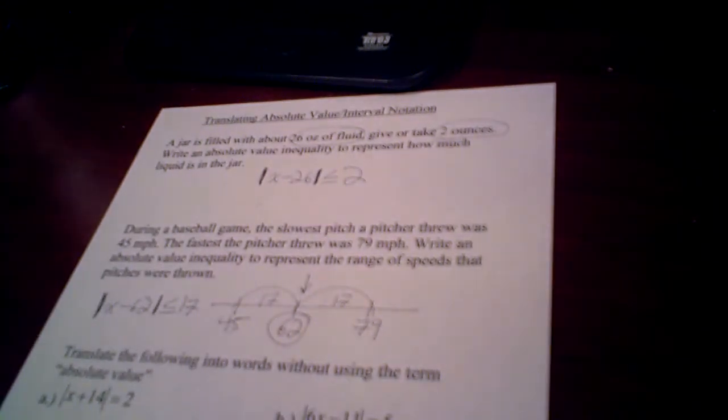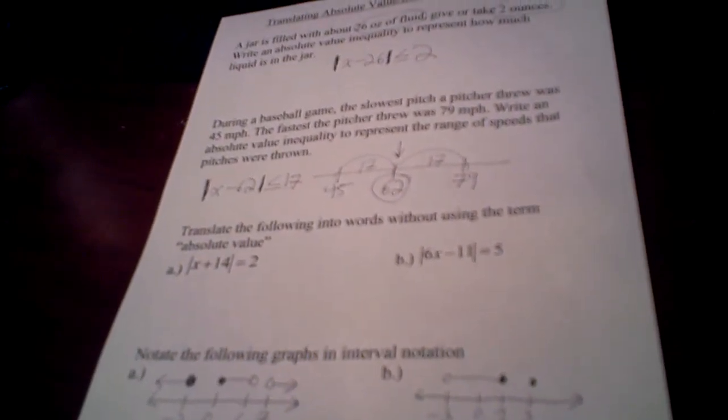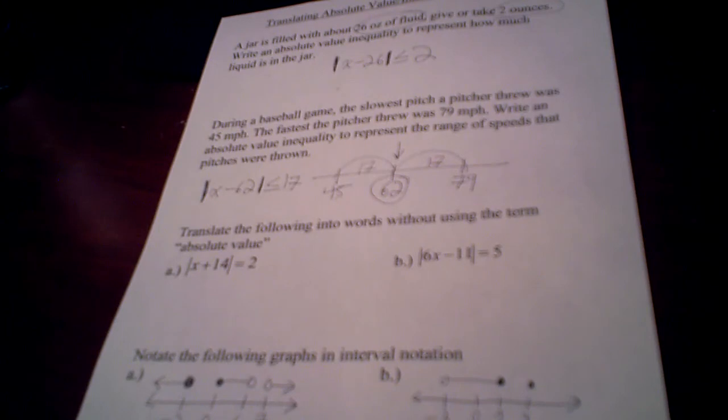So those are the two types of translating problems from words. Alright, when you're given the absolute value and you want to translate it, remember we're talking about distance. Distance, what's the distance from 7 to 4? It's 3, because 7 minus 4 is 3. So when we're trying to find distance, it's about subtraction.